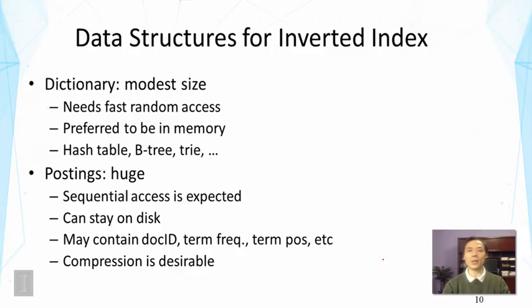For postings, they are huge. And in general, we don't have to have direct access to a specific entry. We generally would just look up a sequence of document IDs and frequencies for all the documents that match the query term. So we would read those entries sequentially. And therefore, because it's large, we generally have stored postings on disk. So they have to stay on disk. And they would contain information such as document IDs, term frequencies, or term positions, etc.